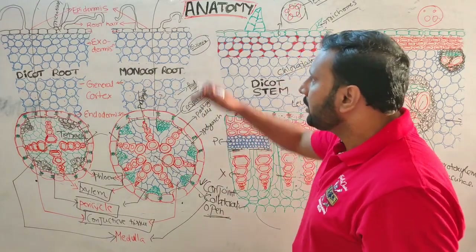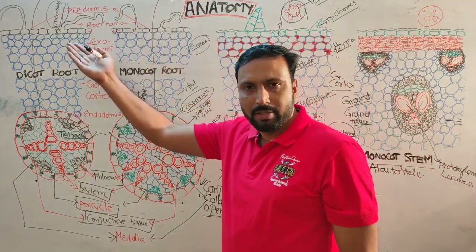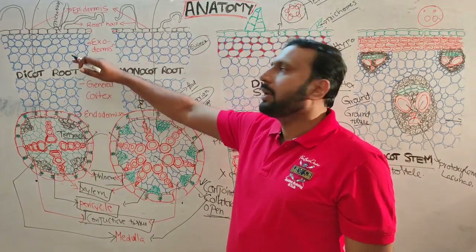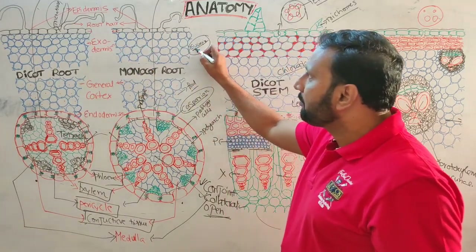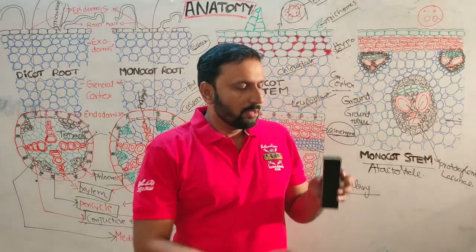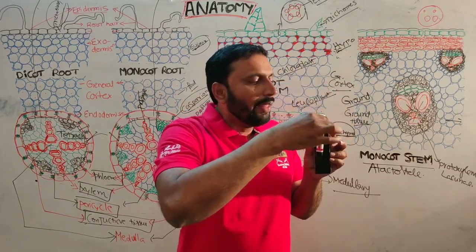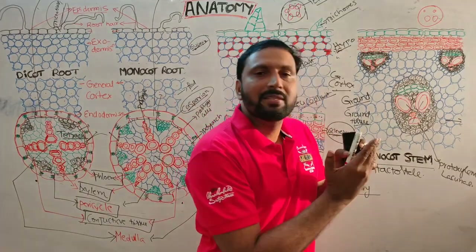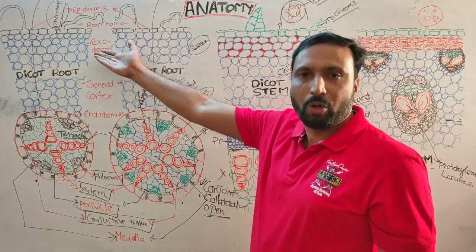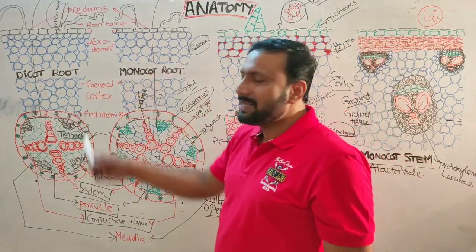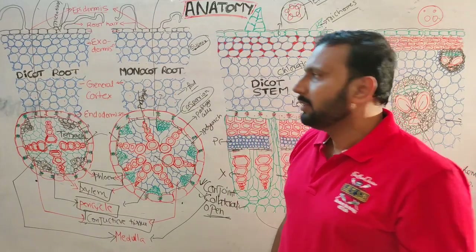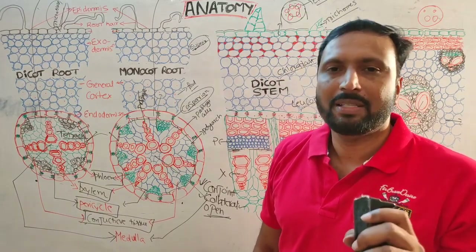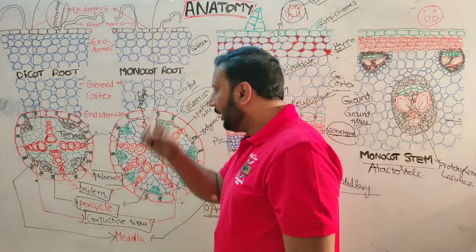The cortex is differentiated into three parts: exodermis, general cortex, and endodermis. Exodermis is the outermost layer of the cortex, made up of suberin. When the root enters the soil, the epidermis can rupture, so the exodermis acts as a protective layer. The general cortex contains leucoplasts, which are colorless plastids that store food materials.